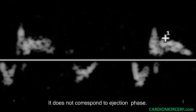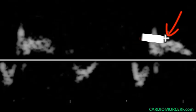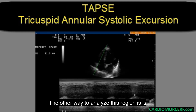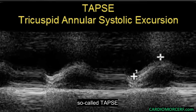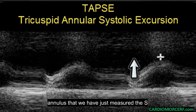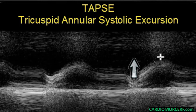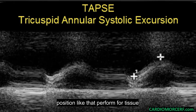The isovolumetric contraction peak does not correspond to the ejection phase. It is easy to recognize that it is not the S prime because it is composed of two waves — one positive and one negative. S prime is the one that follows the negative wave. The other way to analyze this region is by measuring the tricuspid annular plane systolic excursion, so-called TAPSE. It is the displacement of the tricuspid annulus that we have just measured with S prime velocity, and it is widely used. We measure with one-dimensional echo the plane of the annulus with the cursor in a position like that performed for tissue Doppler.